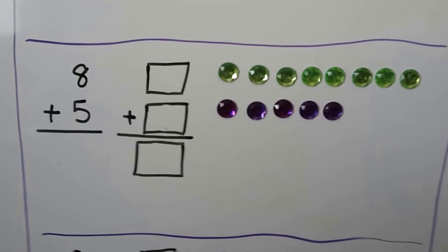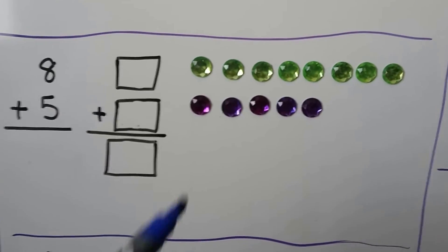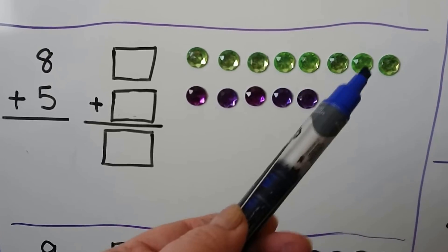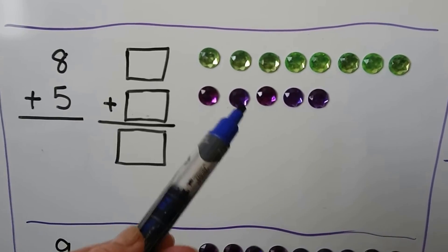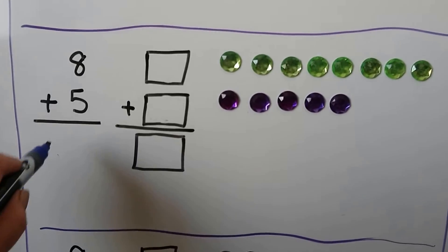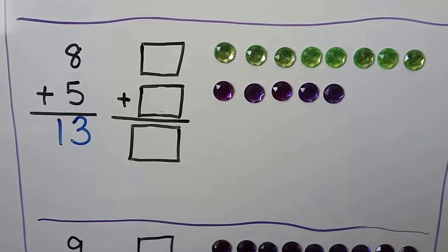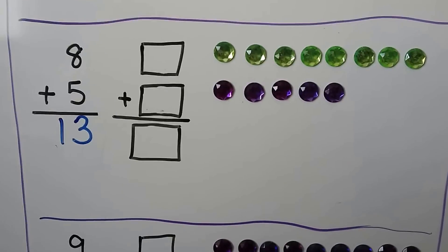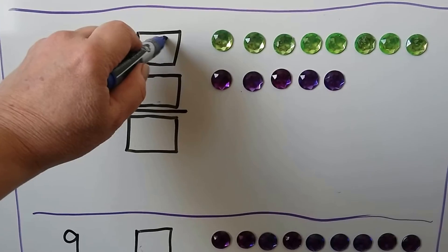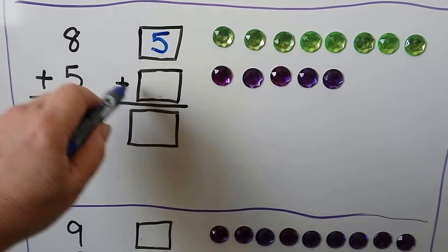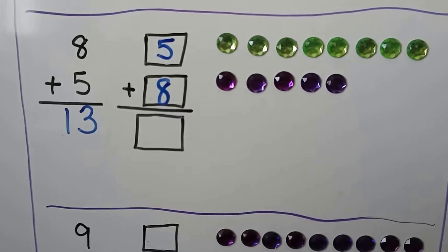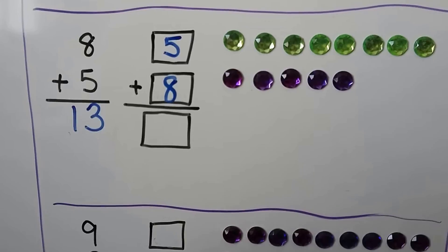Here we have 8 green gems and 5 purple gems — 1, 2, 3, 4, 5, 6, 7, 8, 9, 10, 11, 12, 13 gems in all. 8 plus 5 is equal to 13. We can change the order of the addends and put the 5 up here on top and put the 8 down below it. We haven't taken any gems away or added any gems. It's the same sum — it's 13.